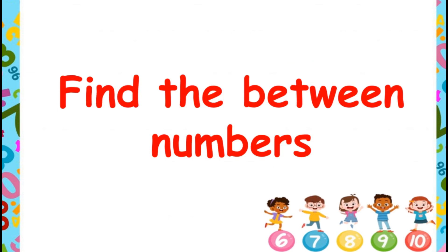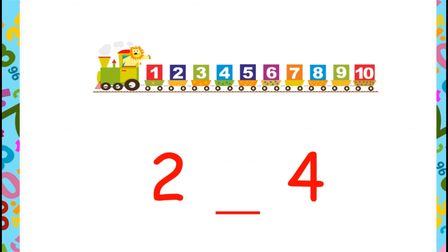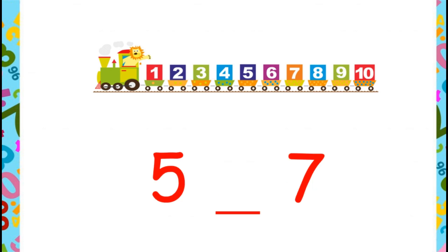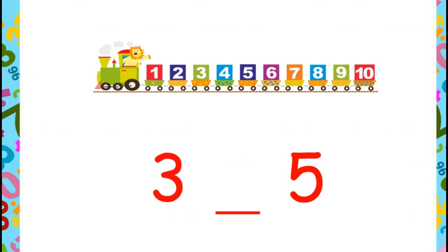Let's find the between numbers. What is the between number of 2 and 4? As 3 comes in the middle of 2 and 4, so 3 is the between number of 2 and 4. Now let's see the between number of 5 and 7 — 6 comes in the middle, so the between number of 5 and 7 is 6. Now let's find out the between number of 3 and 5 — the between number is 4.